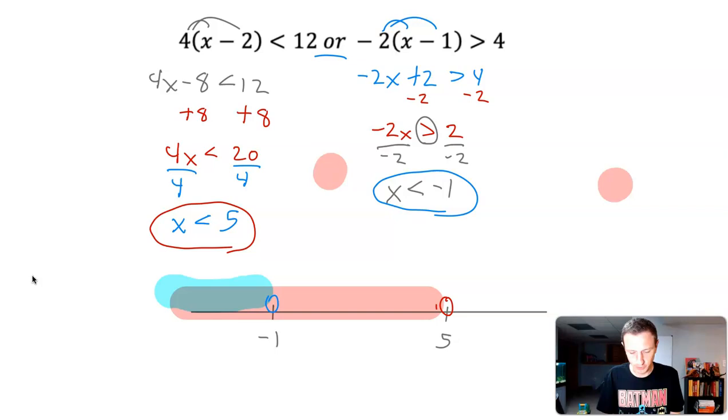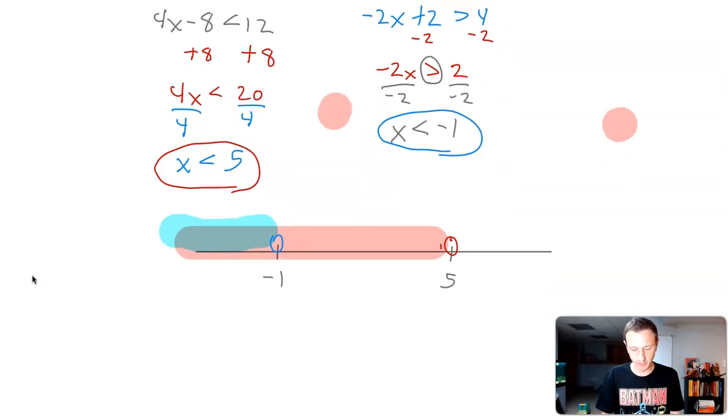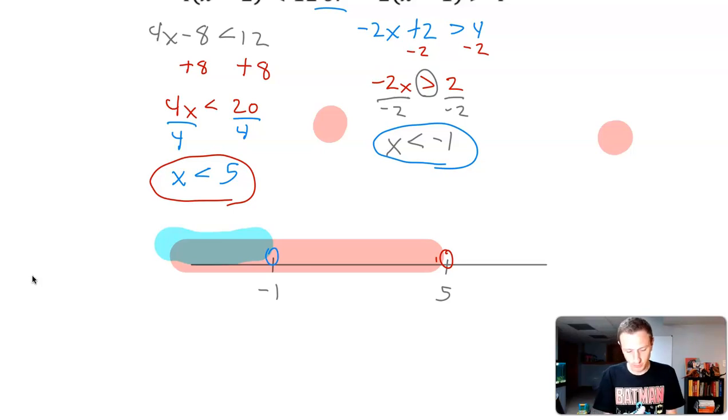So now we're talking about our potential solutions. It says the word or. So it means one or the other. So we want any sort of potential solution zone to be in our interval notation. As we can see here, both of them are going out towards negative infinity. So my interval is going to start at negative infinity. And where is it going to go? Well, if I go up to negative 1, I still have more solutions all the way through 5. So my interval is going to go from negative infinity to 5.